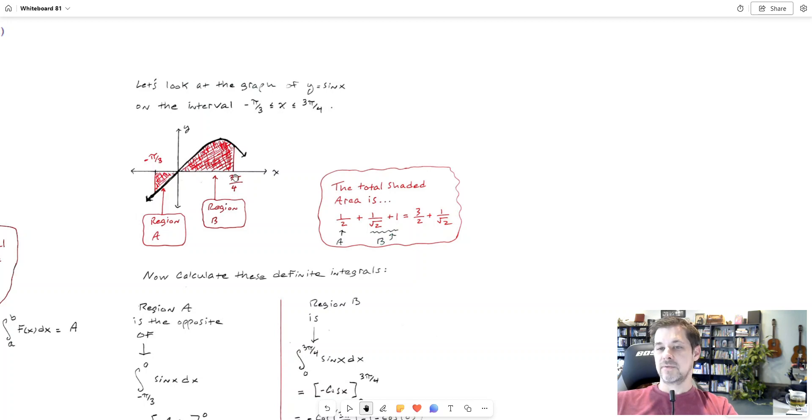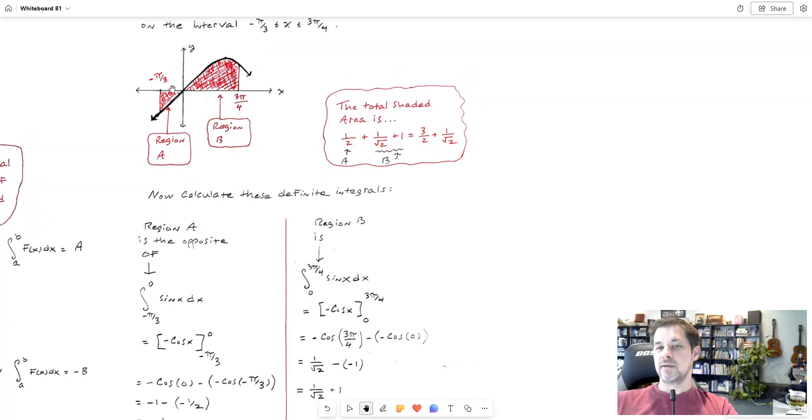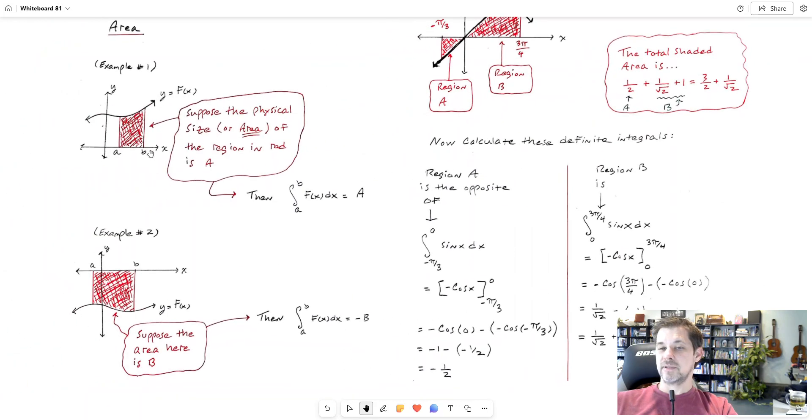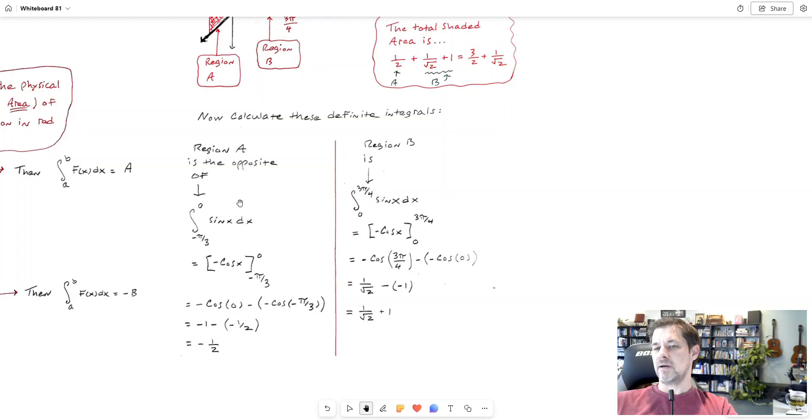And from 0 to 3 pi over 4 it's entirely positive. So if I'm supposed to find the measurement of this area that is contained by the curve sine x and the x-axis on this interval, I could break it into two regions and solve them separately. So I'll say region A goes from negative pi over 3 to 0 and I'll call region B the part that goes from 0 to 3 pi over 4. I'll use these principles individually to find out how big A is and how big B is, and then I'll just add them together.